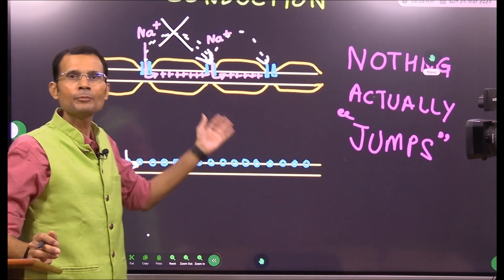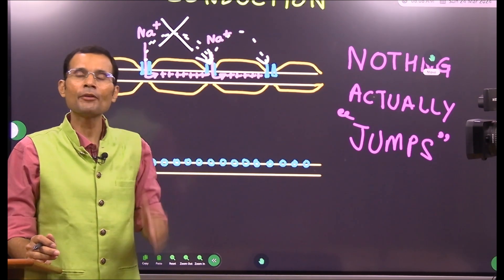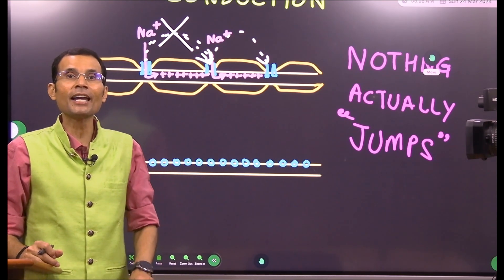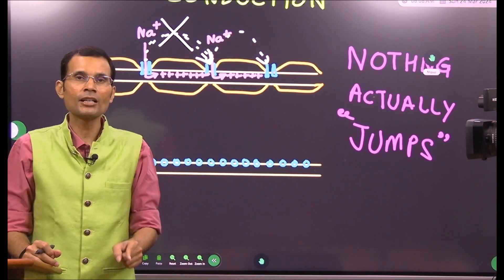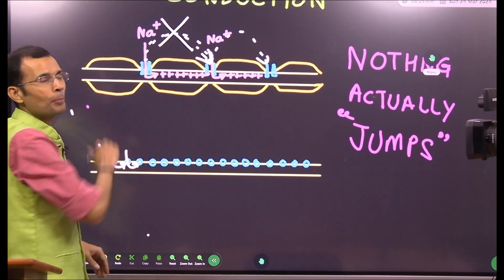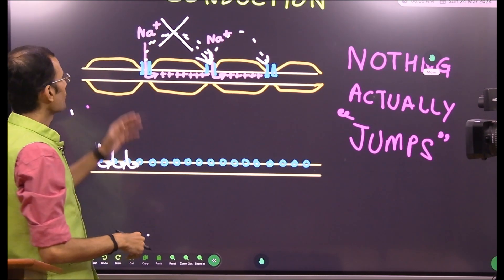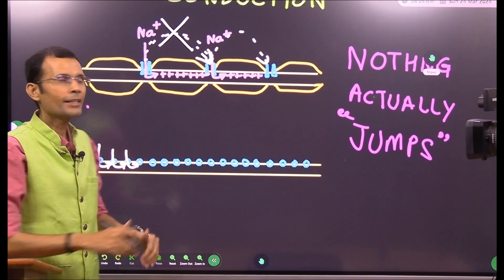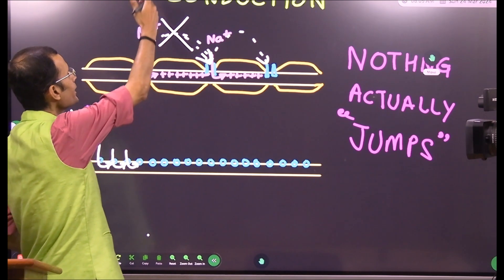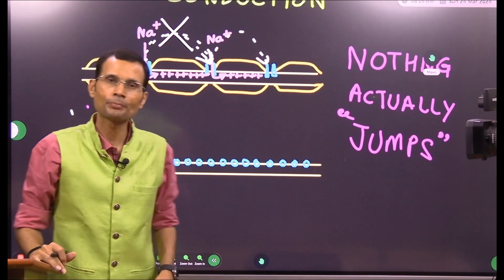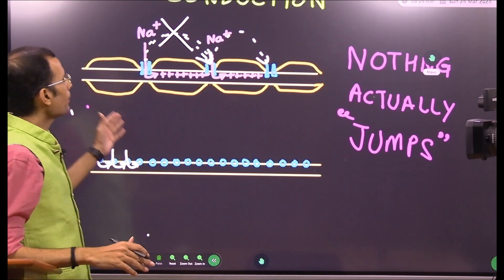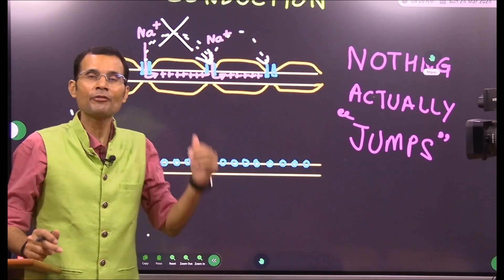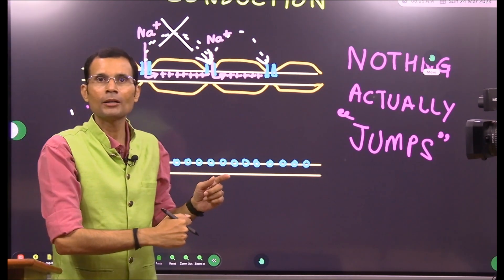If action potentials are continuously sent through the axon, sodium keeps coming in and potassium keeps going out, draining the battery. After every impulse, the sodium and potassium that have moved must be sent back to their original places — their concentrations have to be re-established. This is called recharging, done by the sodium-potassium pump. The pump sends sodium from inside to outside and brings potassium from outside to inside. The sodium-potassium pump is an ATPase — it breaks down ATP every time it performs this function.